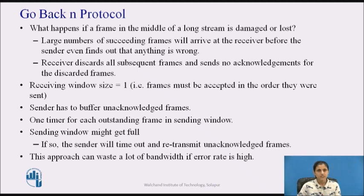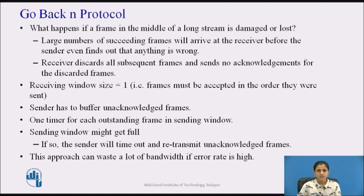In the go-back-N protocol, the receiver simply discards all subsequent frames, sending no acknowledgements for the discarded frames. This strategy corresponds to a receive window of size 1. The data link layer refuses to accept any frame except the next one it must deliver to the network layer. If the sender's window fills up before the timer runs out, the pipeline will begin to empty. Eventually, the sender will time out and retransmit all unacknowledged frames in order, starting with the damaged or lost one.